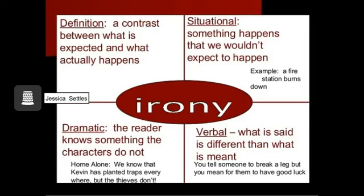Irony is a figure of speech which shows a contradiction between what is expected and what actually occurs. There are three types of irony: dramatic irony, verbal irony, and situational irony.